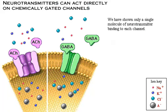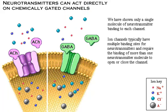Ion channels typically have multiple binding sites for neurotransmitters and require the binding of more than one neurotransmitter molecule to open or close the channel.